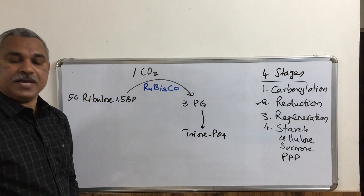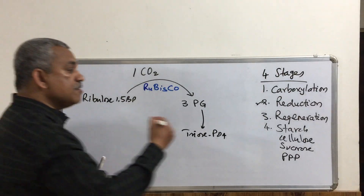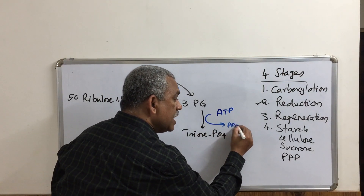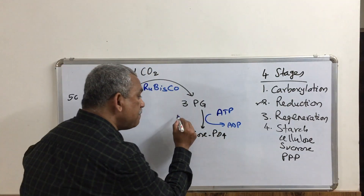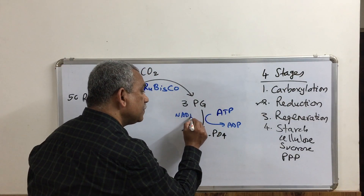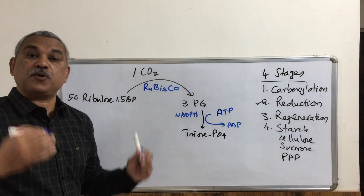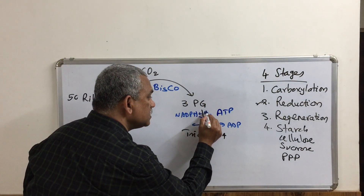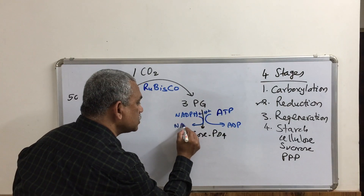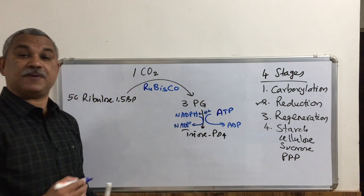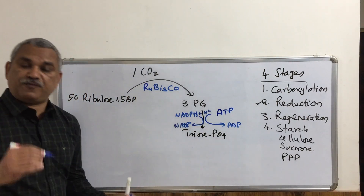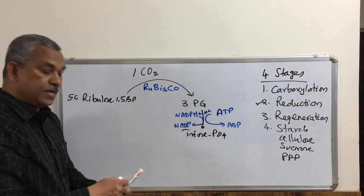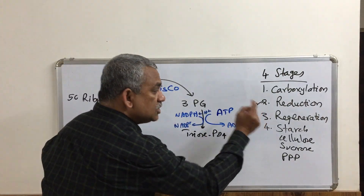In the reduction reaction, 3-phosphoglycerate is converted into triose phosphate. ATP is utilized and converted to ADP, and NADPH is oxidized to NADP+. Remember, NADPH is produced in the light reactions. The product of this step is triose phosphate.